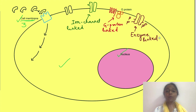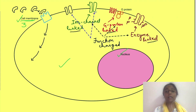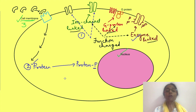The hormone receptor is not just a structural protein — it is linked to other proteins which are either ion channels, G proteins, or enzymes. Once the hormone binds to its receptor, there is a change in the function of these linked proteins, leading to either opening or closing of ion channels affecting ion movement, or phosphorylation of intracellular proteins. Phosphorylation and dephosphorylation of proteins is a key mechanism for activation and inactivation of many proteins inside the cell.